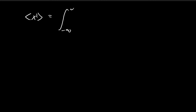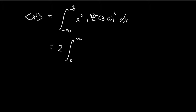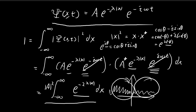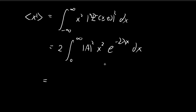Next we find ⟨x²⟩. This time the integrand is not an odd function, so we can't use the same trick. We substitute in the wave function. Again, by symmetry I write 2 times the integral from 0 to ∞. Since we're in the positive region we drop the absolute value sign. I'll pull the A² factor outside, leaving the integral of x² e^(−2λx) from 0 to ∞.